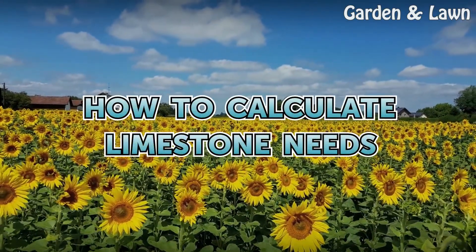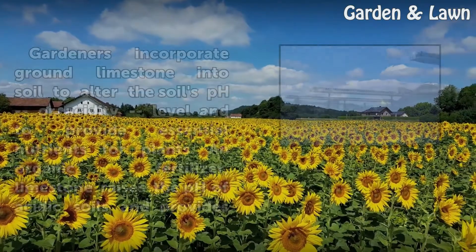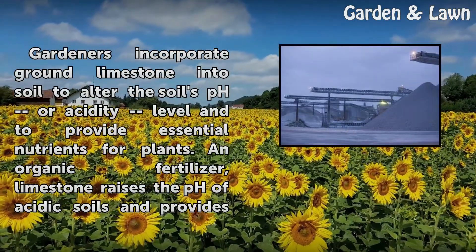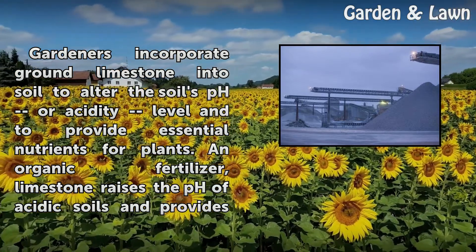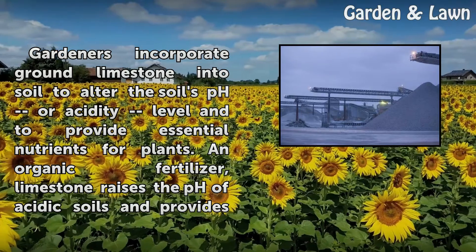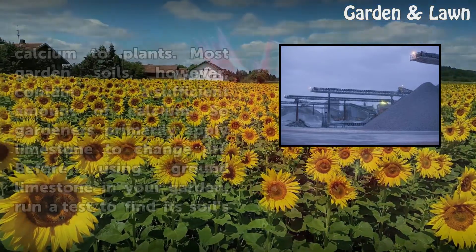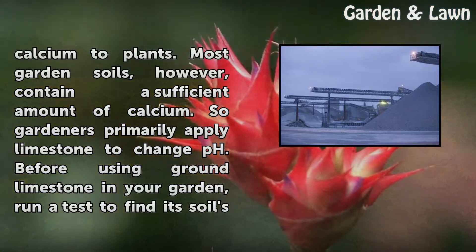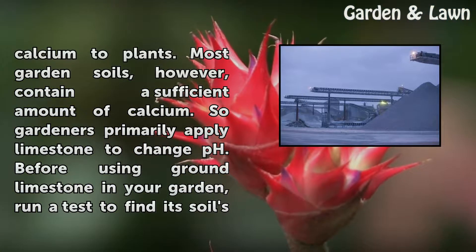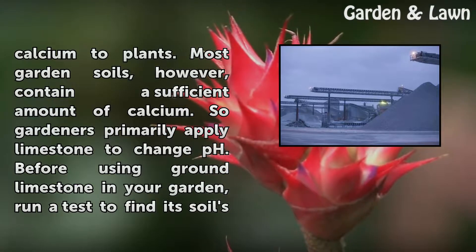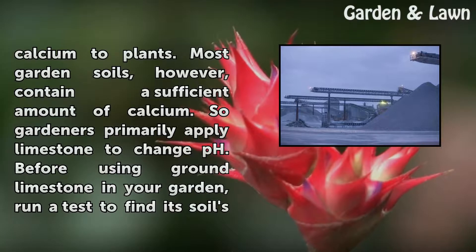Gardeners incorporate ground limestone into soil to alter the soil's pH or acidity level and to provide essential nutrients for plants. An organic fertilizer, limestone raises the pH of acidic soils and provides calcium to plants. Most garden soils, however, contain a sufficient amount of calcium, so gardeners primarily apply limestone to change pH.